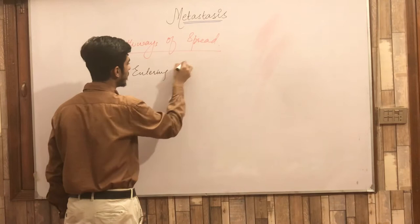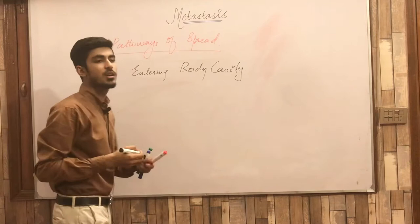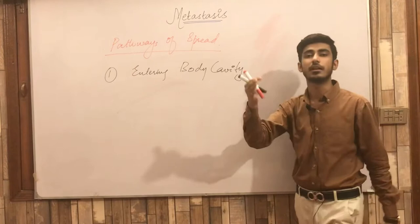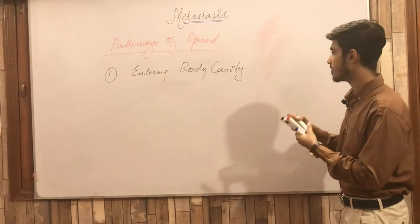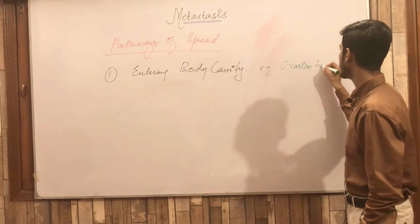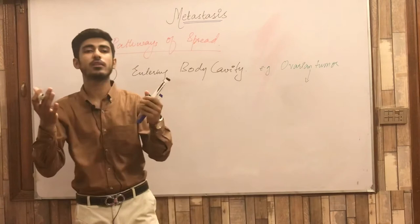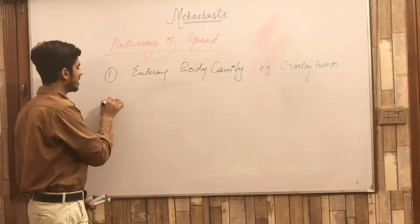The first pathway is entering into the body cavities. Certain tumours enter into body cavities such as the peritoneal cavity, pericardial cavity, and pleural cavity. An example is the ovarian tumour, which enters the peritoneal cavity and fills the entire peritoneal cavity with tumour mass. This is the first route of spread.